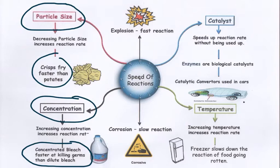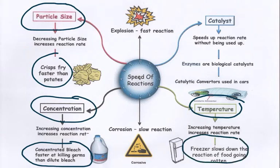If we increase the temperature, then the particles that are present have more energy. This means they are more likely to collide with the correct amount of energy required for the reaction to take place. That's why things are put in freezers to cool and stop them going off, or things are heated up to increase the speed of reaction. The final method is to use a catalyst — a chemical that's not used up during the experiment but will increase the rate of that reaction. It allows a different method for the reaction to take place.